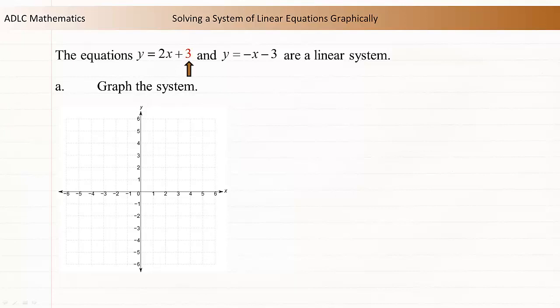The y-intercept of the graph of the first relation is 3, so we'll plot the point. The slope of the graph of the first relation is 2, so I'll count the rise of 2 for every run of 1 to determine other points on the line. Although only two points are required to graph a linear relation, plotting more points usually produces a more accurate graph. Now draw a line through the points.